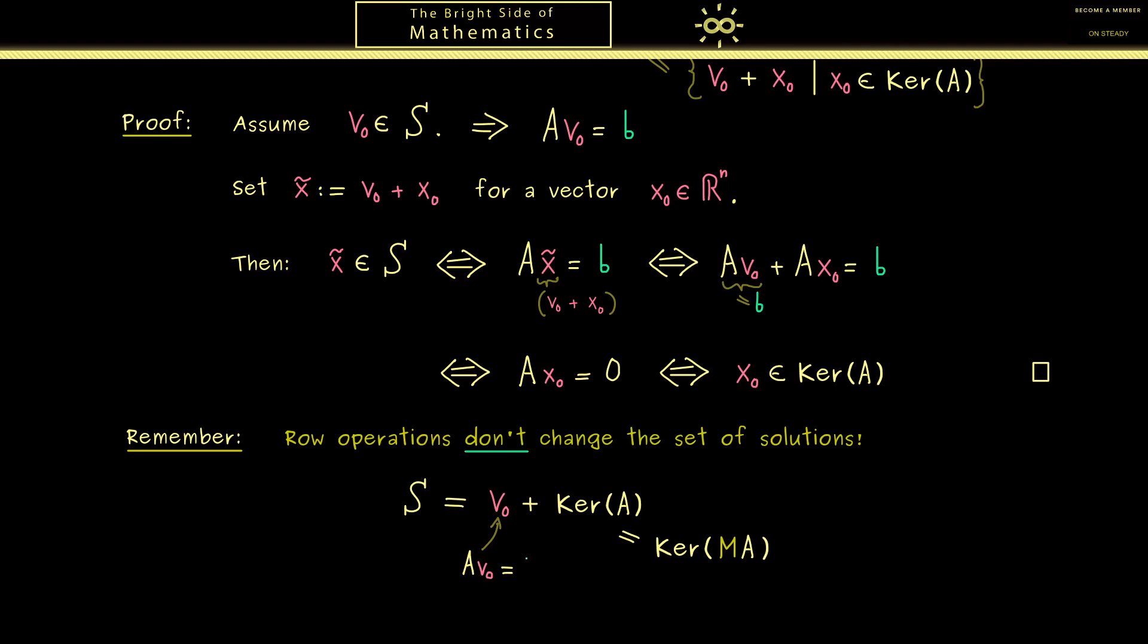More precisely, if Av_0 = b, you can just multiply both sides with M. So in summary, we see with row operations we don't change this particular solution here, and we also don't change the kernel, which means we don't change the set of solutions at all.